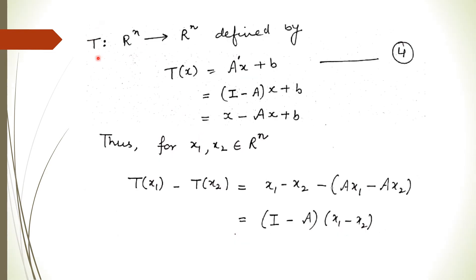So we get a mapping T going from ℝⁿ to ℝⁿ, which is defined by T(x) = A'x + b, where A' = I - A. Now let's expand this and check the contraction property.